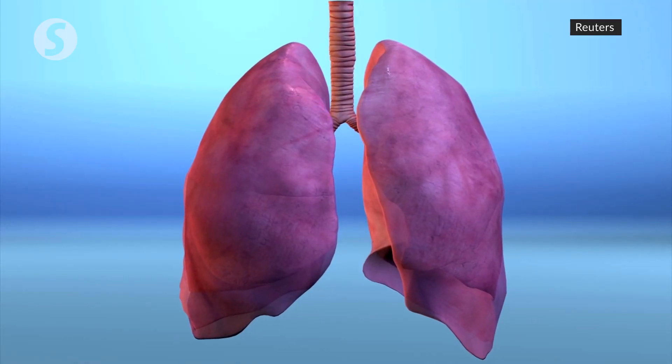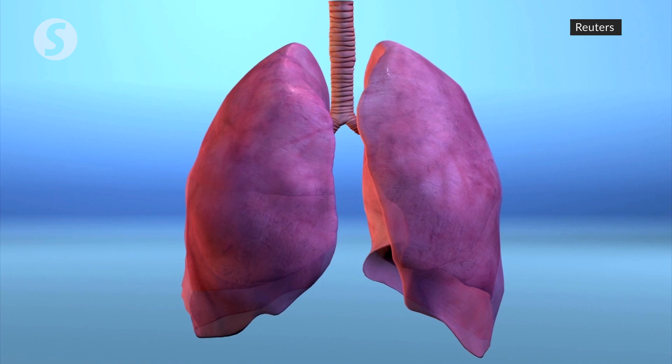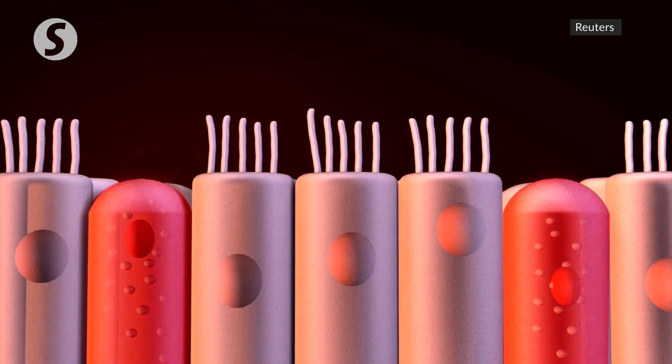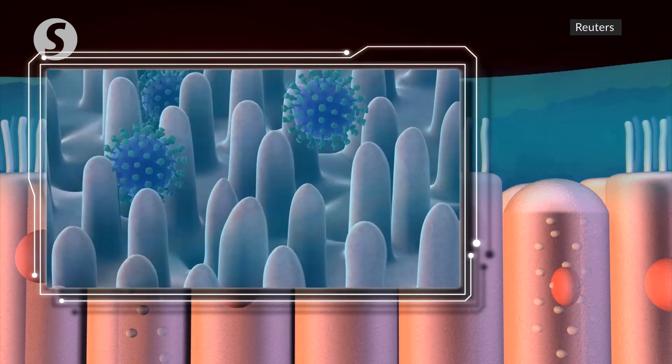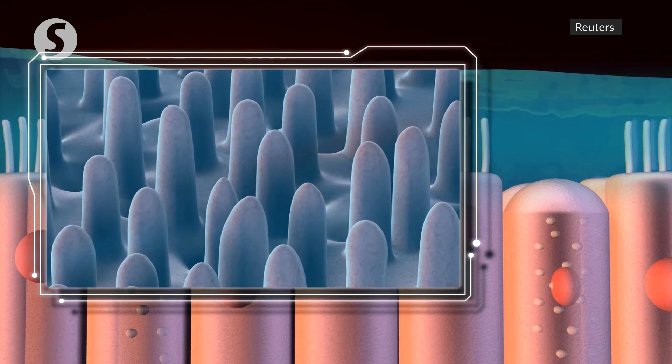Citing Kingston University microbiologist Mark Fielder, Sky News reports that the virus seems to attack two types of lung cells: goblet cells that coat the respiratory tract with mucus and ciliated cells that usually filter out pathogens.